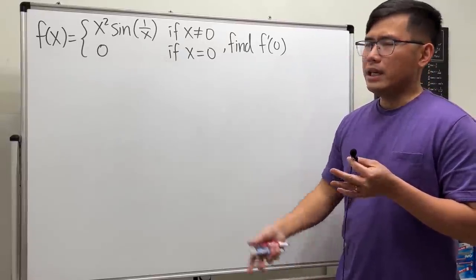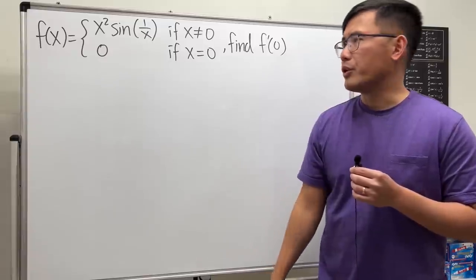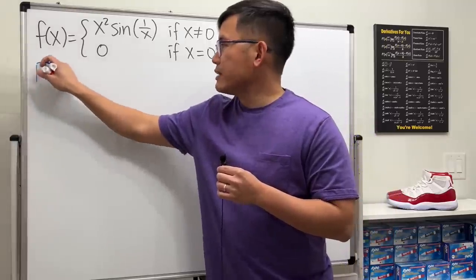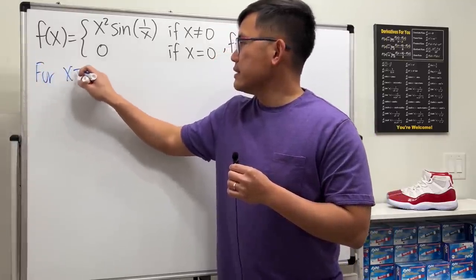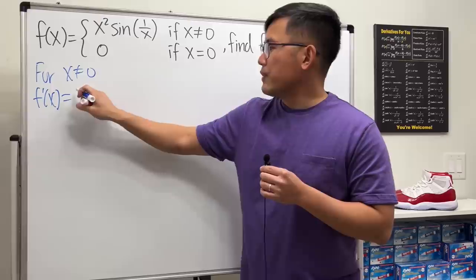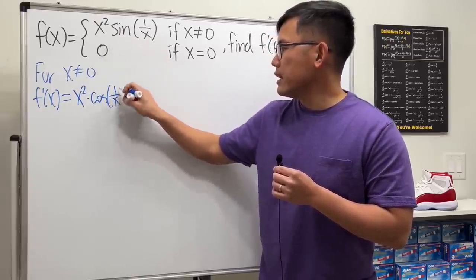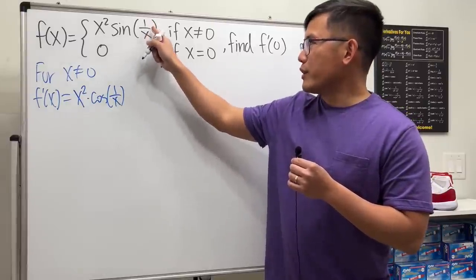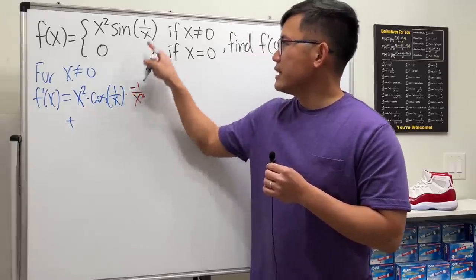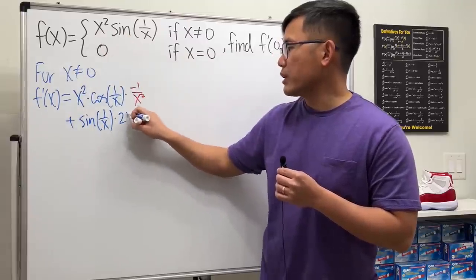First, you might be wondering, why can we just take the derivative? Maybe we just have to use the product rule and also the chain rule. Well, let me show you. If you focus on this right here, that only works for x is not equal to 0. So I would have to say, for x is not equal to 0, then we look at f prime of x. Use the product rule. We keep the first function, which is x squared times the derivative of the second, which is cosine of 1 over x. And don't forget the chain rule. Multiply by the derivative of 1 over x, which is negative 1 over x squared.